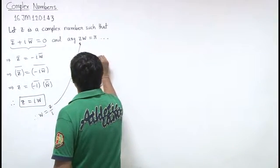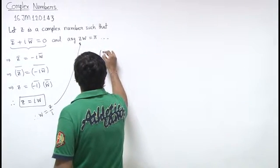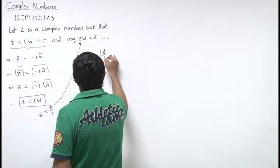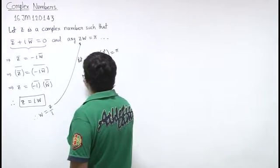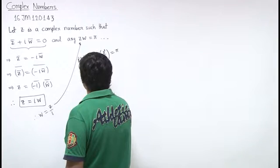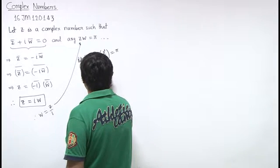So we have argument of z square upon iota equal to pi. From here, we can write argument of z square using the argument property.